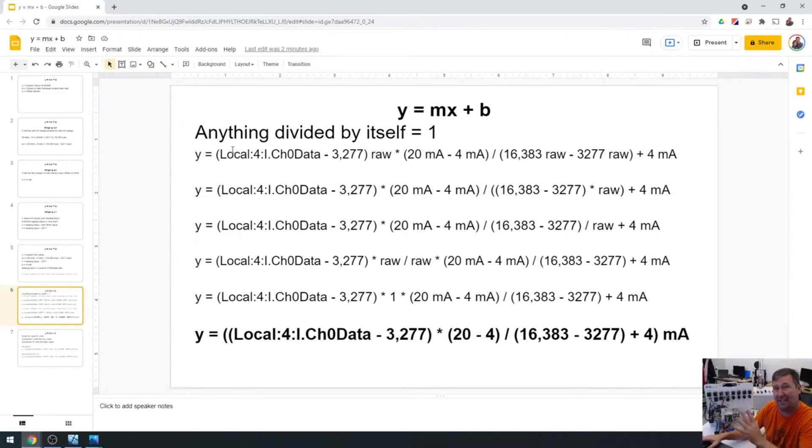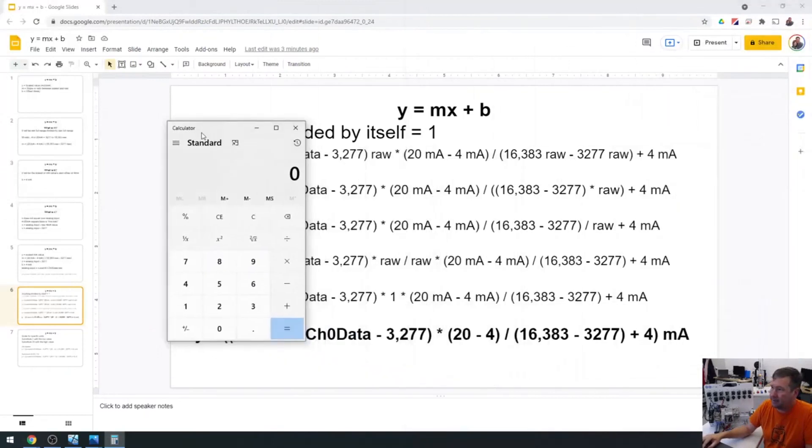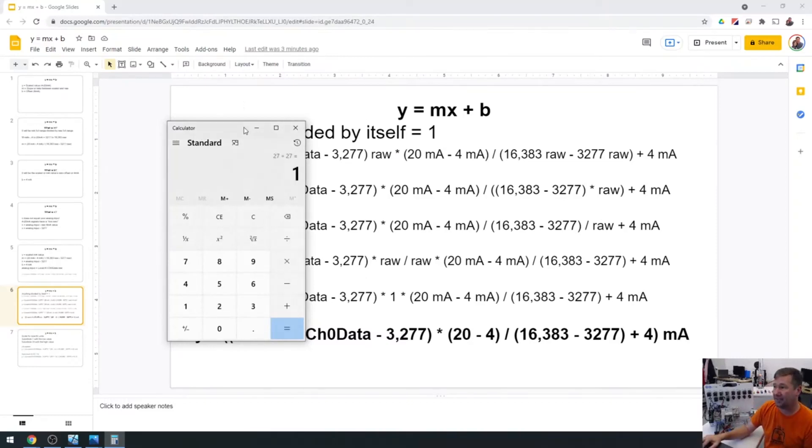Now I'm still leaving these rolls in here. There's a reason for that. And then times 20 milliamps minus four milliamps divided by 16383 minus 3277 and then plus four because we do have that live zero. Now here's just a little bit of why that is and really, I don't want to get too deep into this because this is not a math class. But this is how you can kind of keep track of it. And one divided by or any number divided by itself is one. So one divided by one is one.